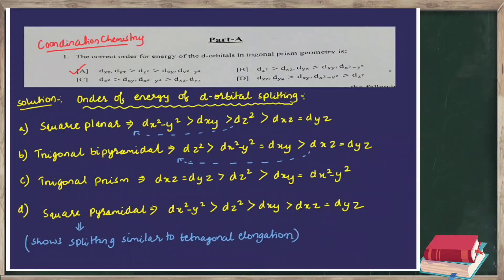The first question is from coordination chemistry. It asks for the correct order of energy of the d orbitals in trigonal prismatic geometry. To answer this you need to remember the d orbital splitting order for trigonal prismatic geometry. There are many complex geometries — square planar, trigonal bipyramidal, square pyramidal — and these are commonly asked in many exams.